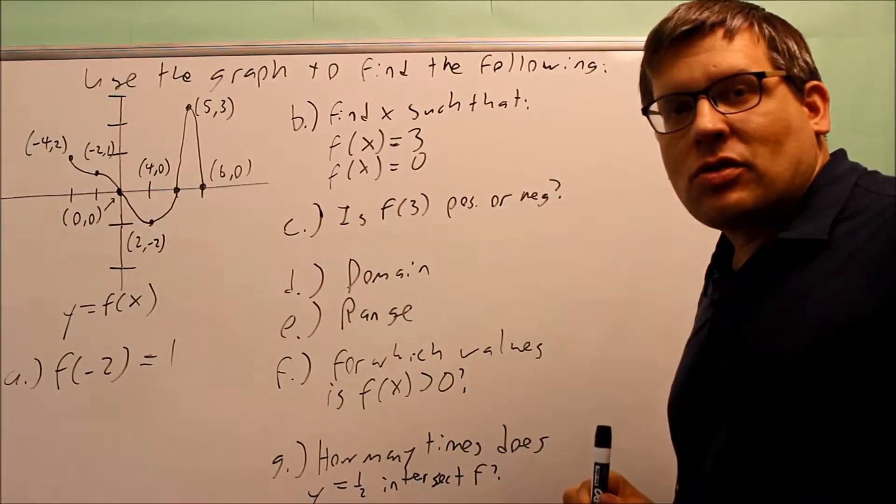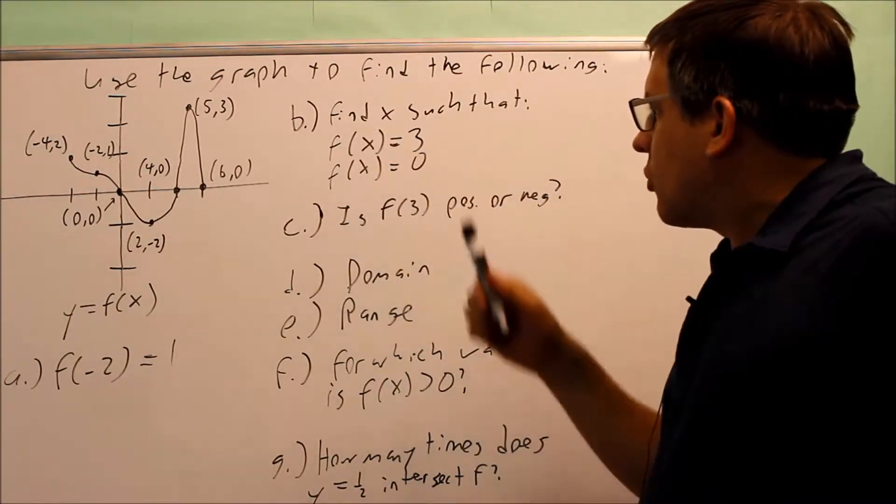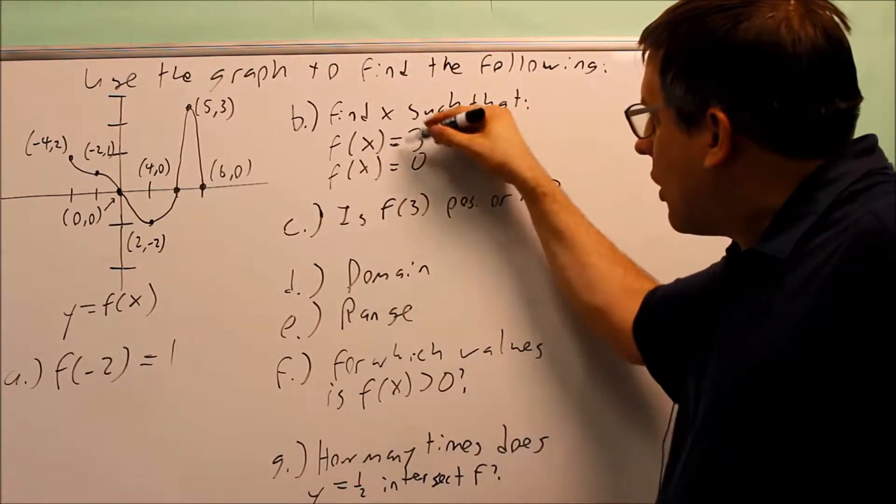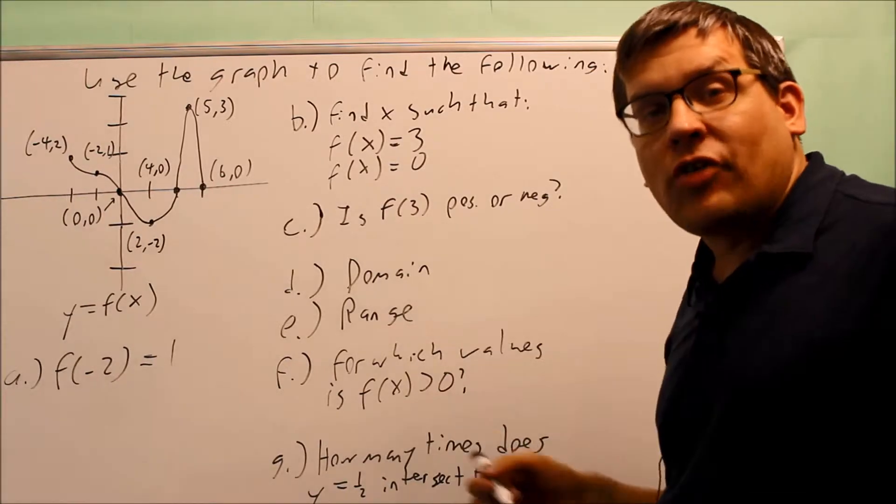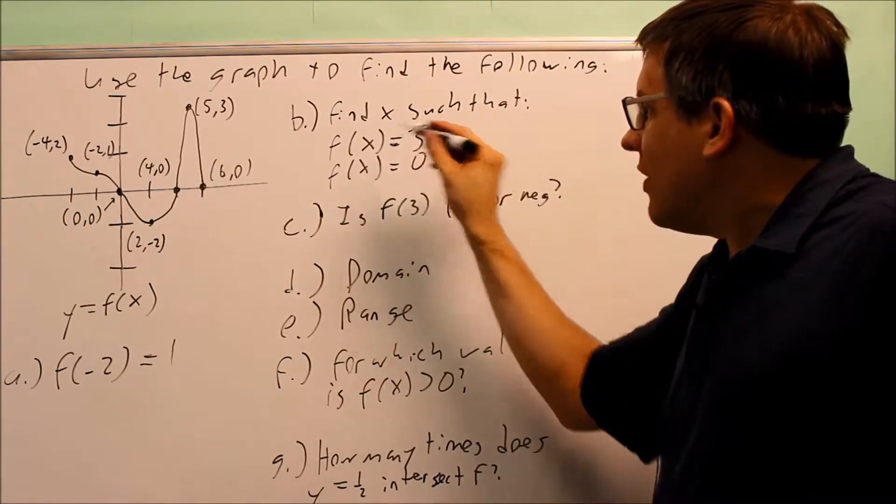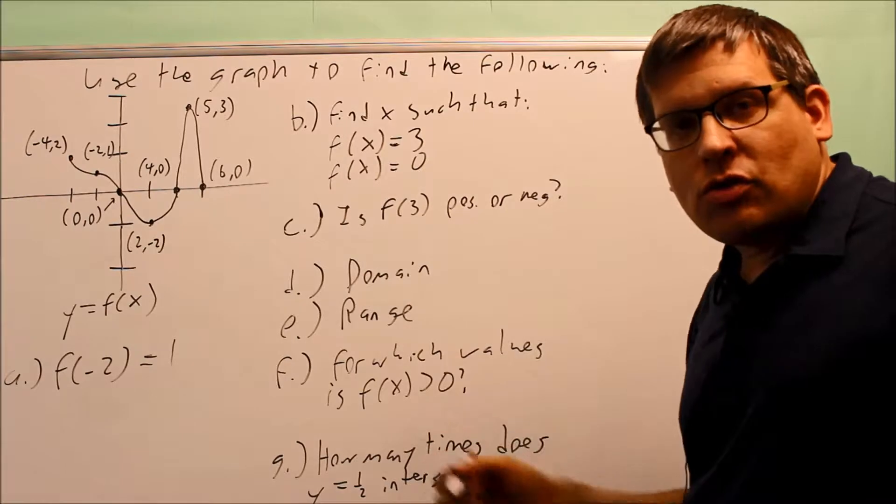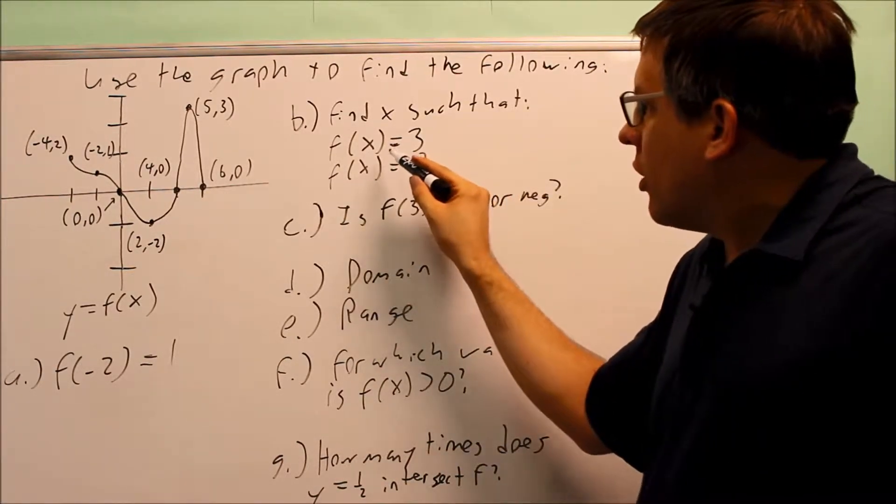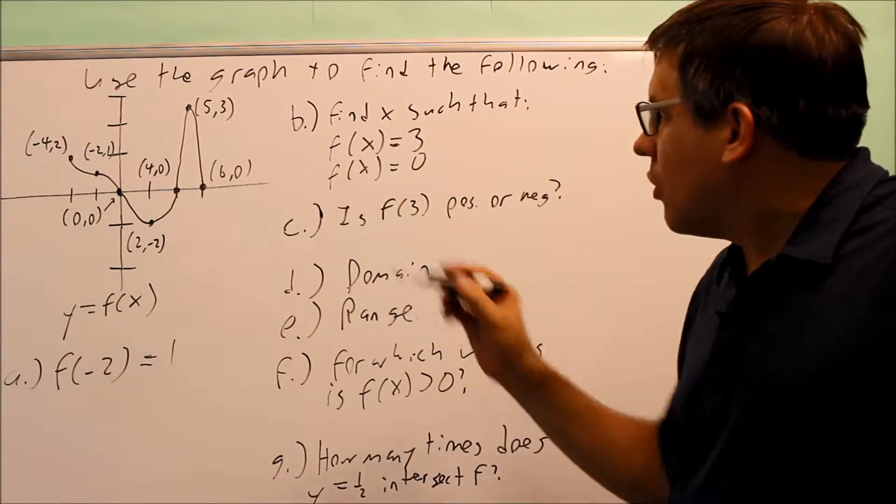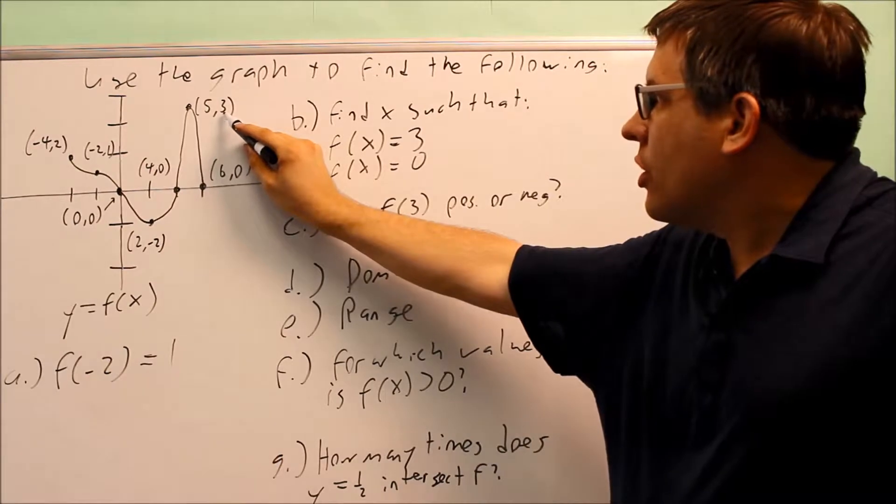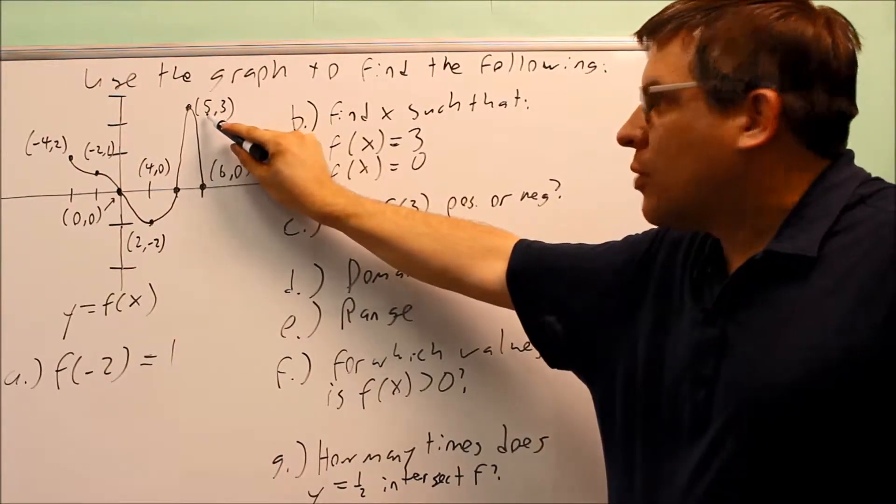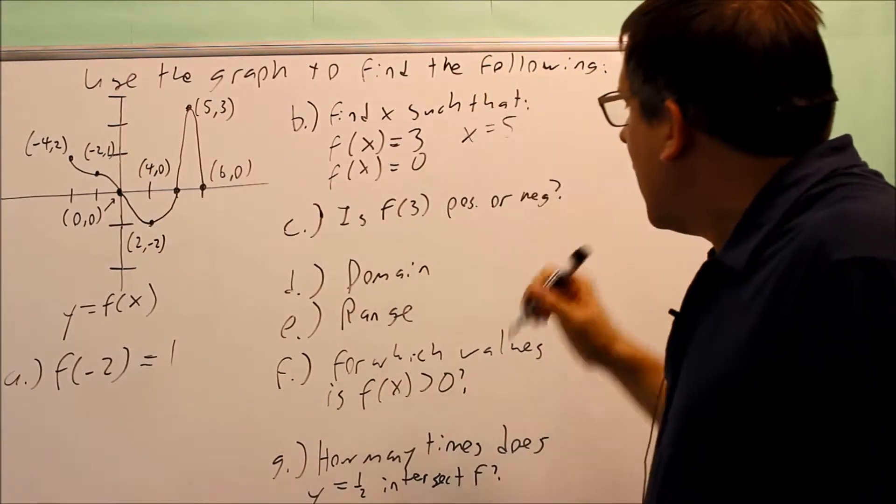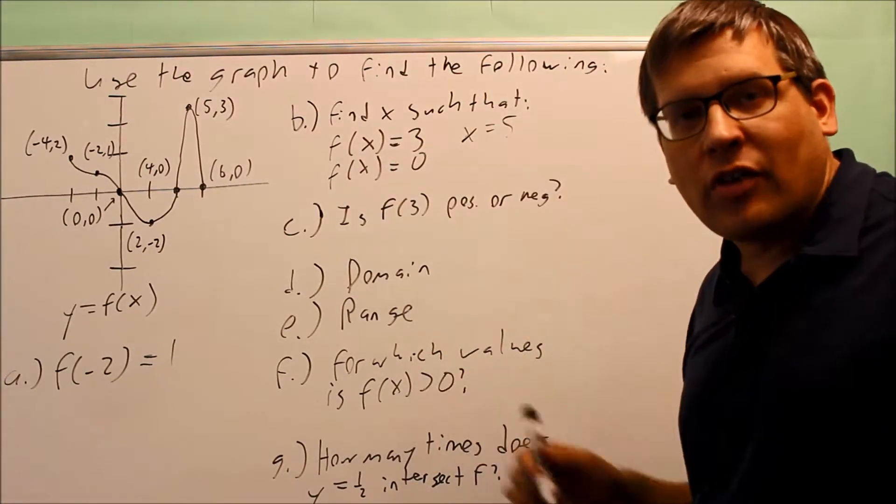Next, we want to find x such that f(x) = 3, and we're also going to do f(x) = 0. This one's asking the reverse. Because this number after the equal sign is given, that's the y value that's given. So you want to find the x value that gives you a y value of 3. If we look at the graph, the y value of 3 is right here, which corresponds to an x value of 5. So my x value is going to equal 5. When x is 5, I get a y value of 3.